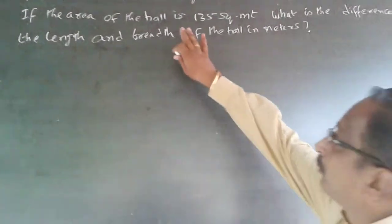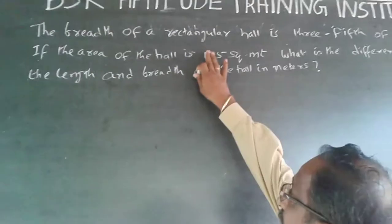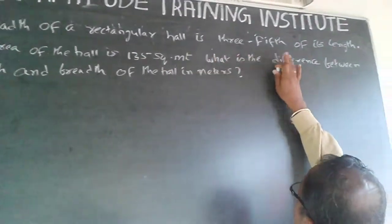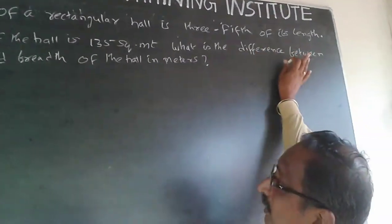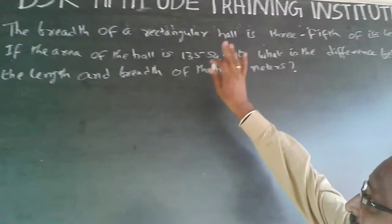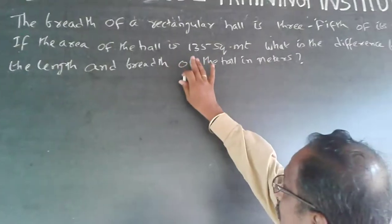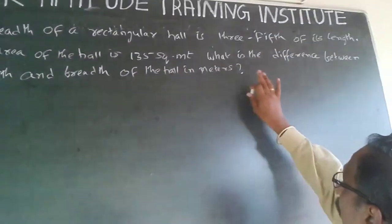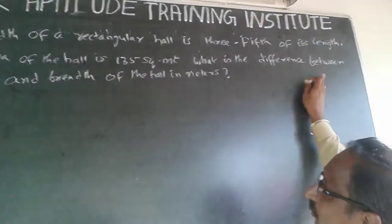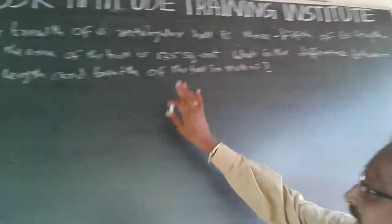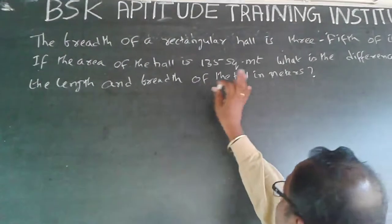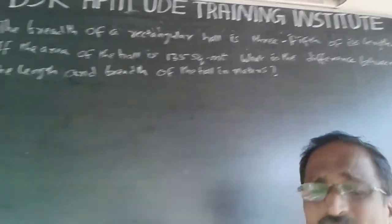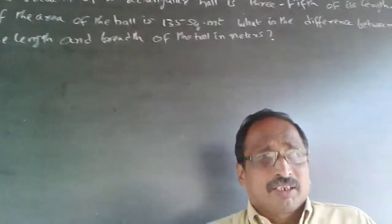The question: the breadth of a rectangular hall is three-fifths of its length. If the area of the hall is 135 square meters, what is the difference between the length and breadth of the hall in meters?